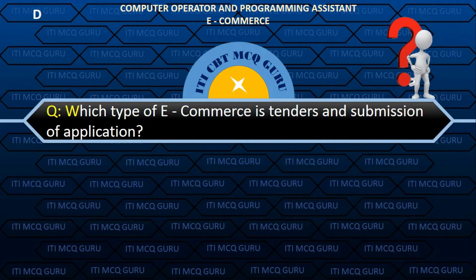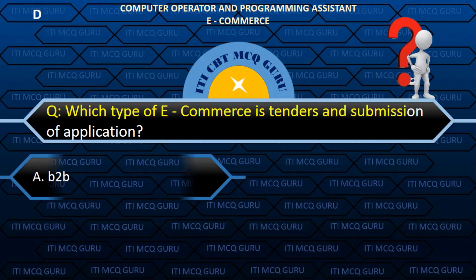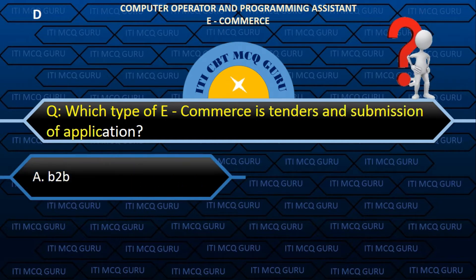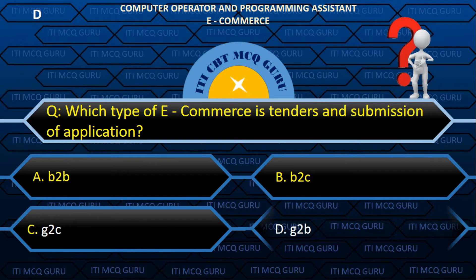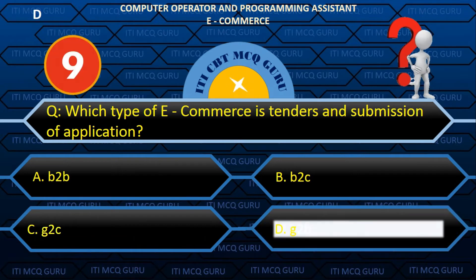Which type of e-commerce is tenders and submission of applications? D. G2B.